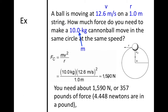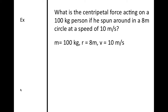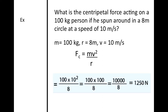It takes much more force to move a cannonball at the same speed. Here's another example: what is the centripetal force on a 100 kg person spinning in an 8-meter circle at 10 meters per second? Using F_C = mv²/r, the answer is 1250 newtons.